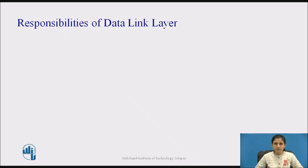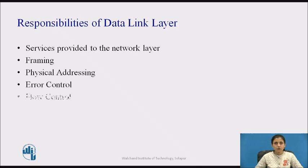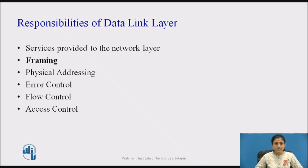The data link layer has a number of specific functions which include providing a well-defined service interface to the network layer, framing, physical addressing, error control, flow control, and access control. In this video, we are going to see the function framing in detail.